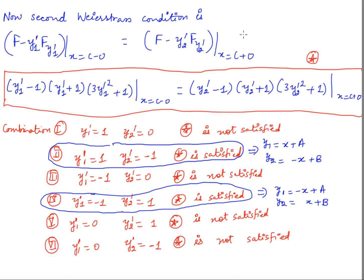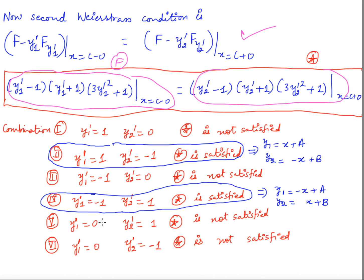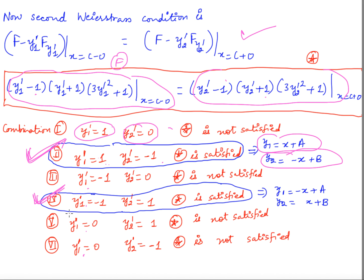Applying the second Weierstrass condition f - y' f_{y'} from left equals from right, only cases (2) and (4) are satisfied. The other four cases fail this condition. So the two valid possibilities are: y1' = 1, y2' = -1, giving y1 = x + a and y2 = -x + b; and y1' = -1, y2' = 1, giving y1 = -x + a and y2 = x + b.